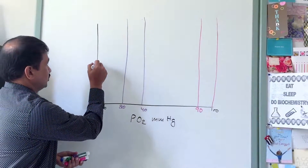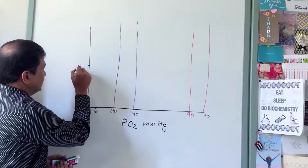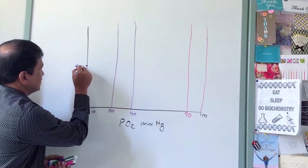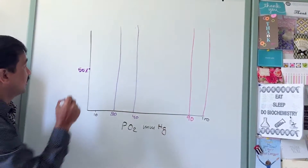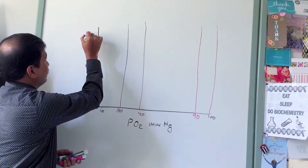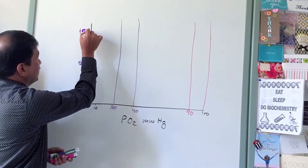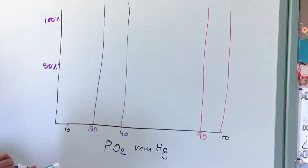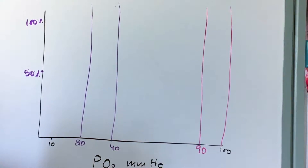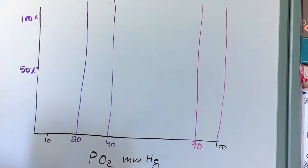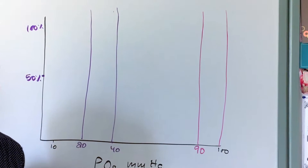On the y-axis, I'll mark two points: 50% saturation and 100% saturation with oxygen.